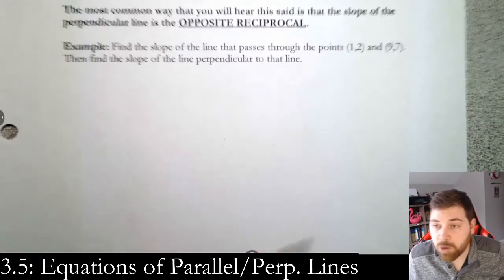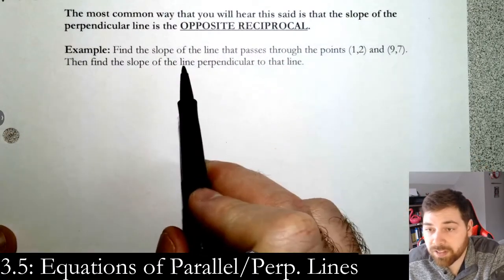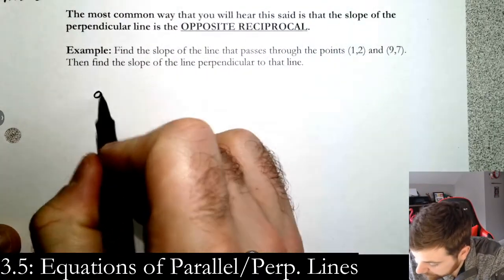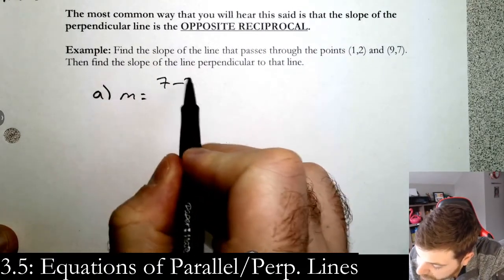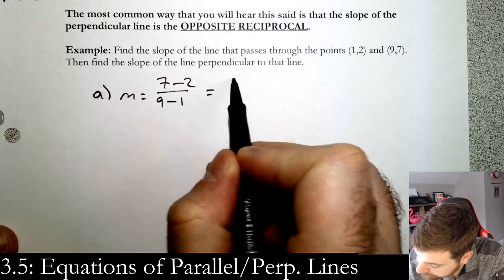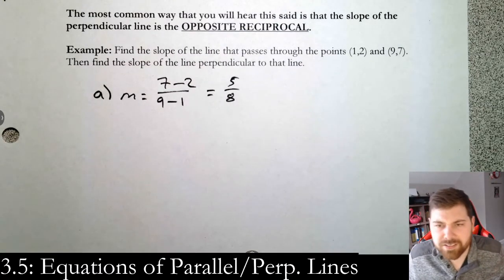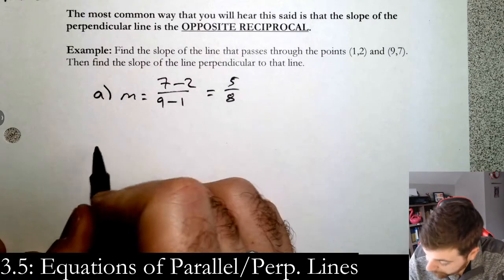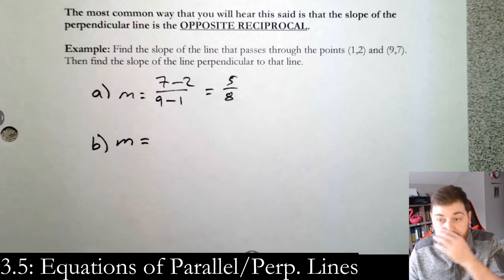Let's use an example. Find the slope of the line that passes through these two points, then find the slope of the line perpendicular. Part A: we just need to find slope, so we do y2 minus y1 over x2 minus x1. We get 5 eighths, so the slope is 5 eighths.